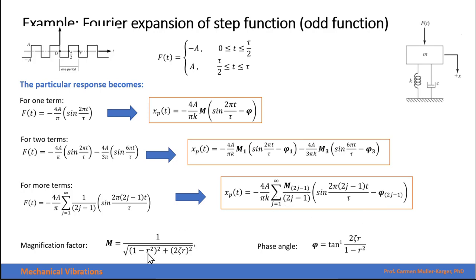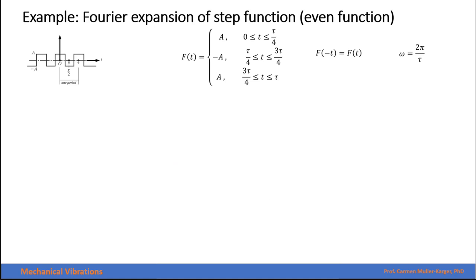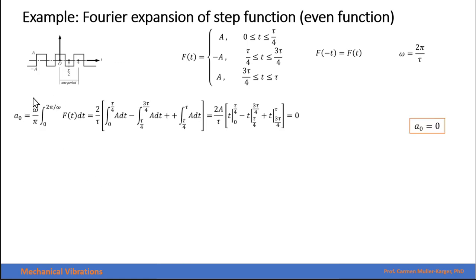For an even function analysis, we use a very similar piecewise function, but the origin is shifted. Between zero and one quarter of the cycle the amplitude is positive, then for half the cycle it is negative, and then positive again for the last quarter. We calculate a₀ by dividing the integral into three parts. These are still constant integrals, and when evaluated at the limits of integration, a₀ equals zero.